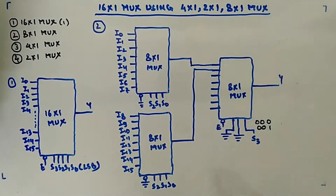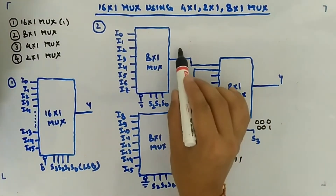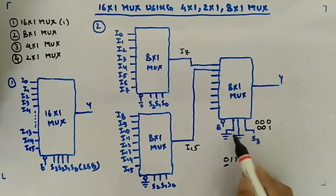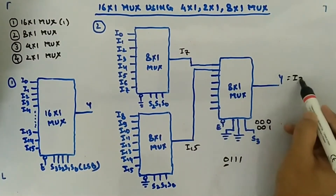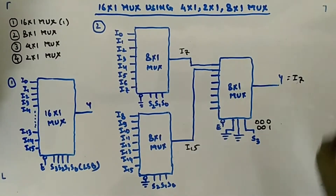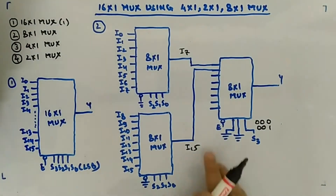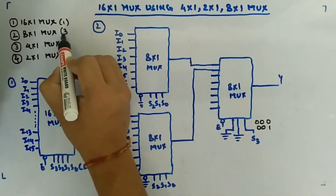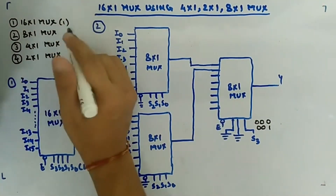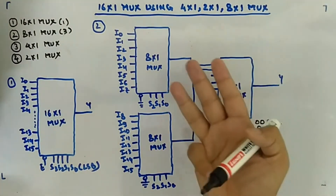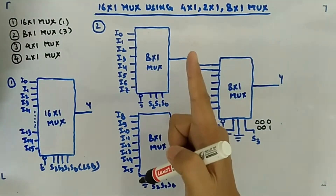Let's take another example: S3 S2 S1 S0 = 0111, which is the 7th input, so output should be I7. With S3 = 0, and S2 S1 S0 = 111 selecting I7, output Y = I7. You can check any combination - nothing new has been done, same analysis as before. Total count: three 8:1 MUXes are needed to make one 16:1 MUX.